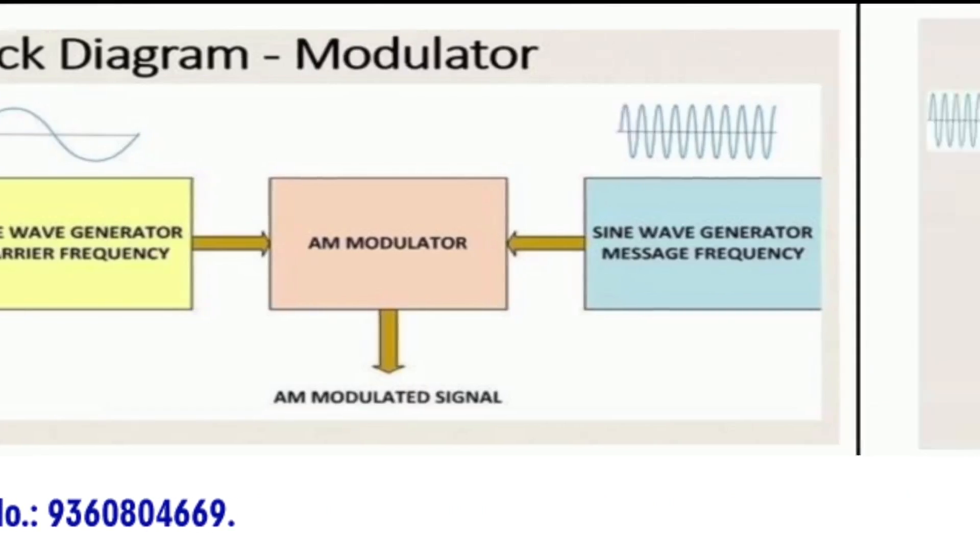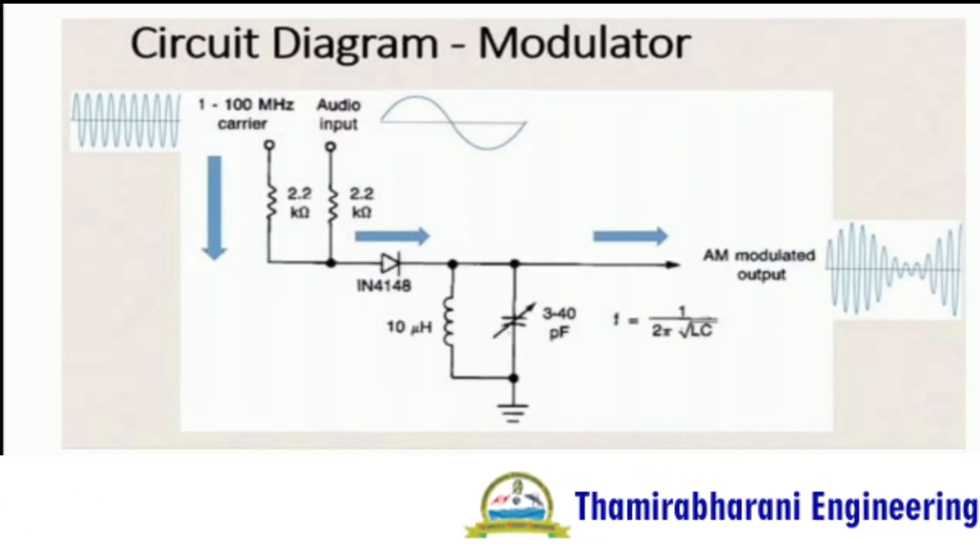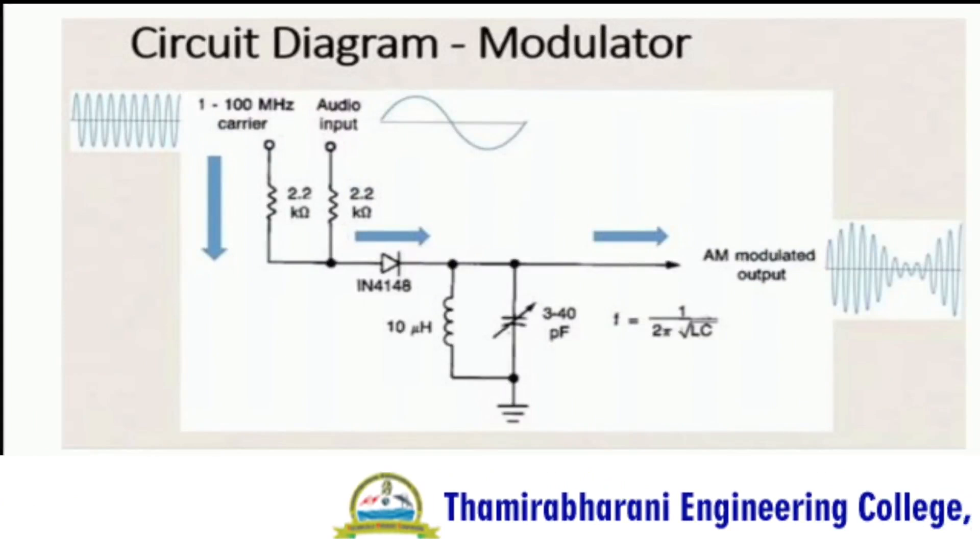The next slide shows the circuit diagram. The simple diode modulator delivers excellent results when used for high percentage modulation at low signal levels. Constants are shown for a carrier frequency of about 100 MHz.